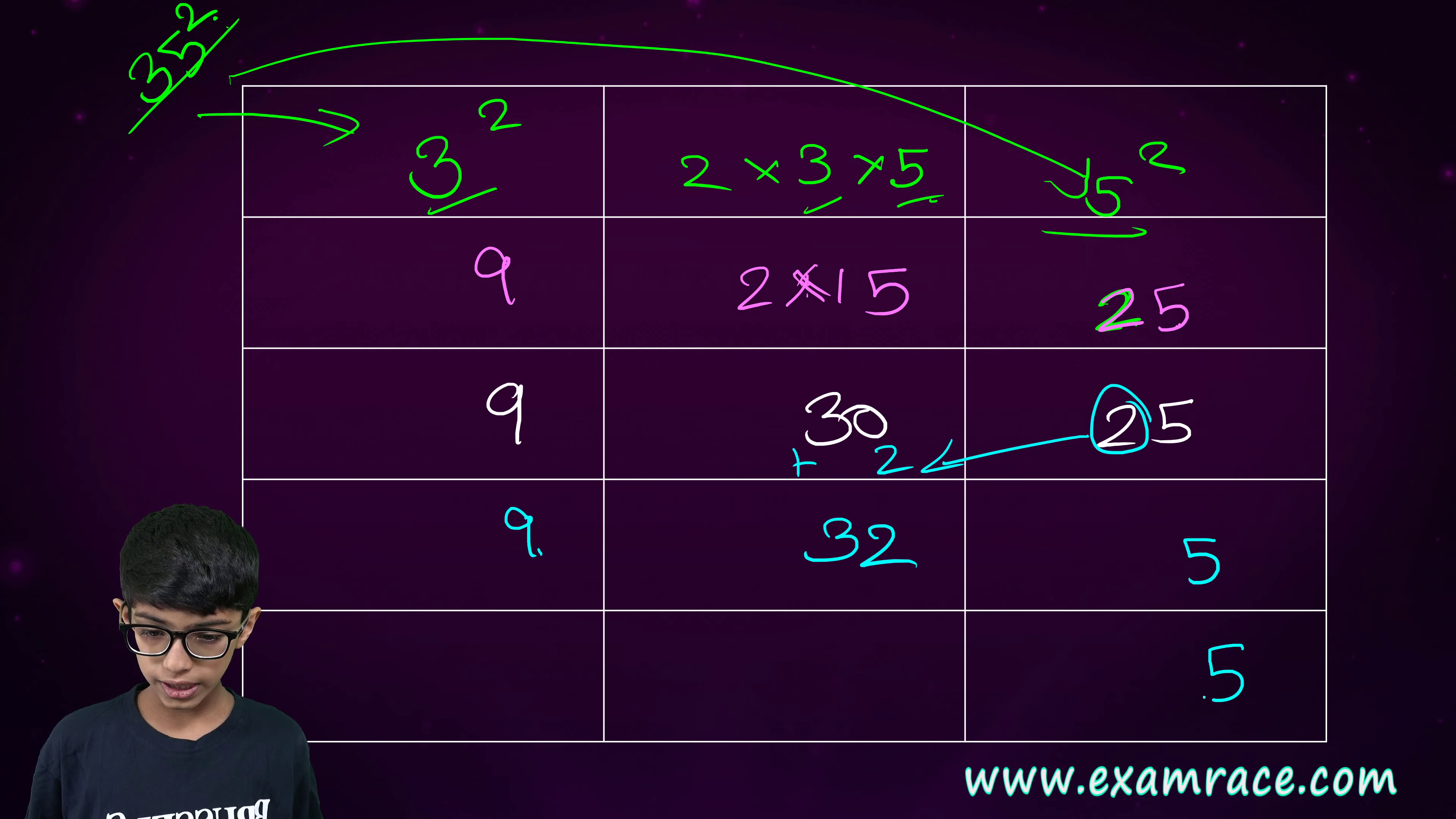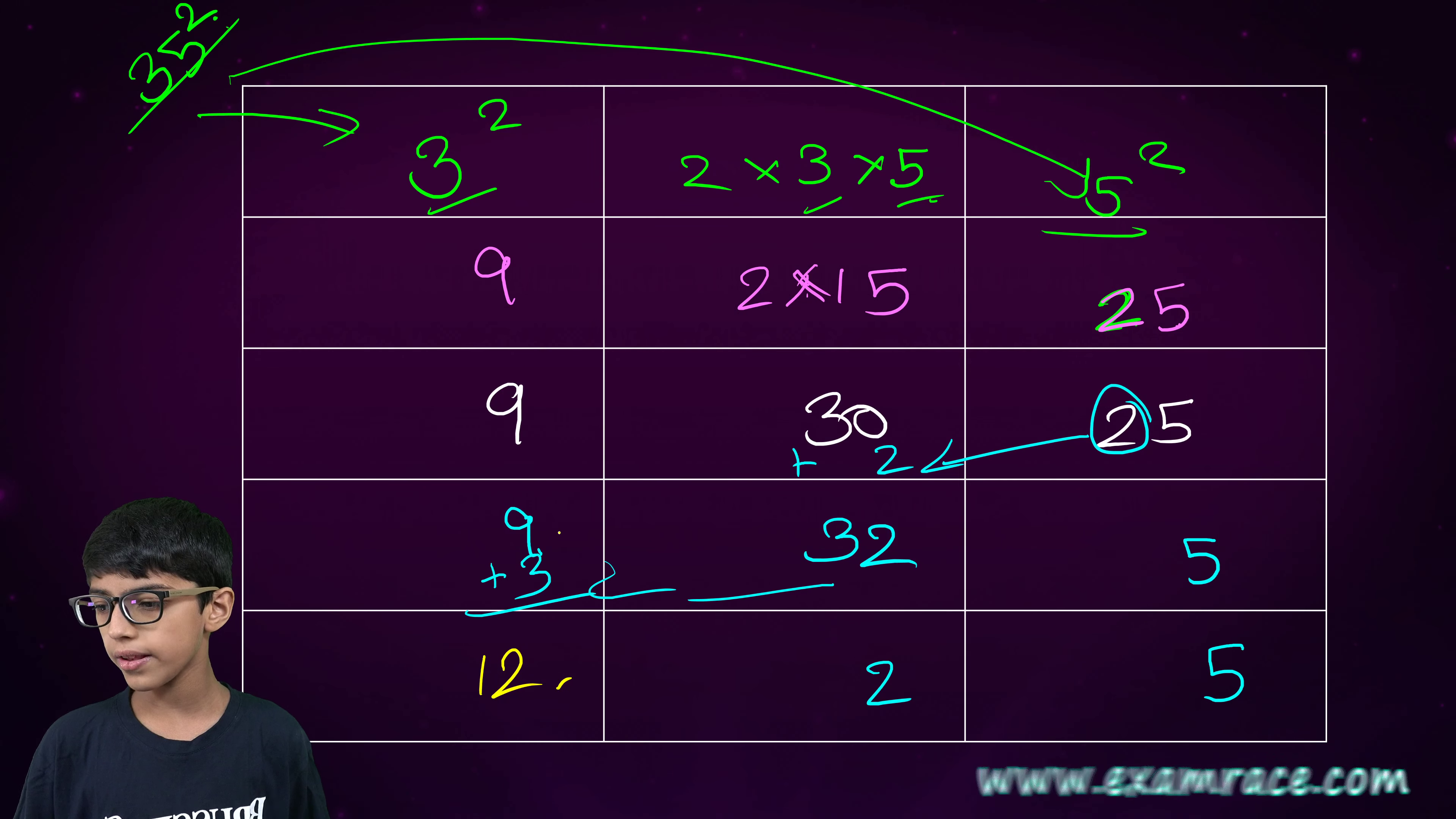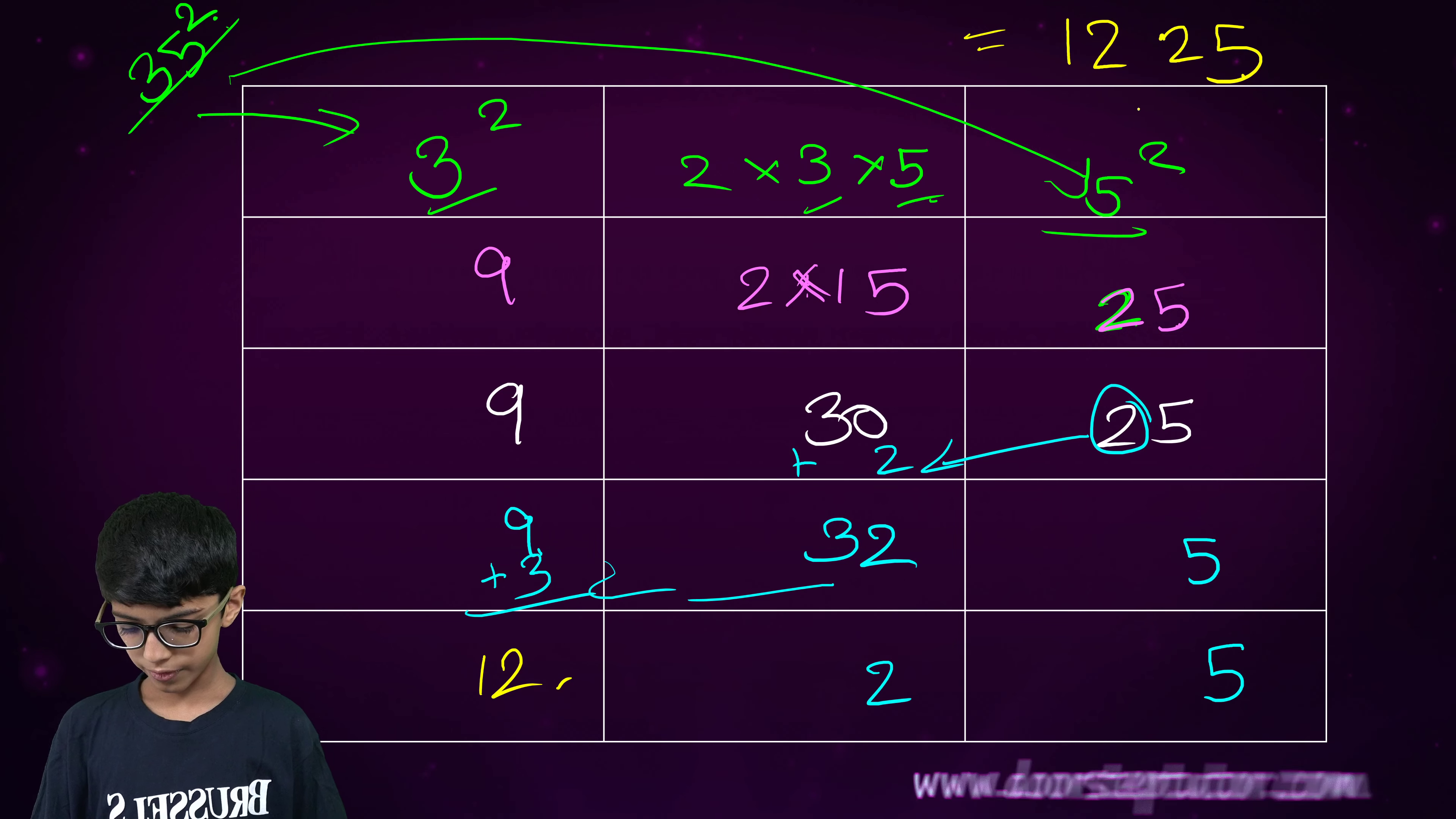Now, five will come as it is. Two will come as it is. And three will be added to nine. Three plus nine is twelve. Therefore, our answer would be one thousand two hundred twenty-five.